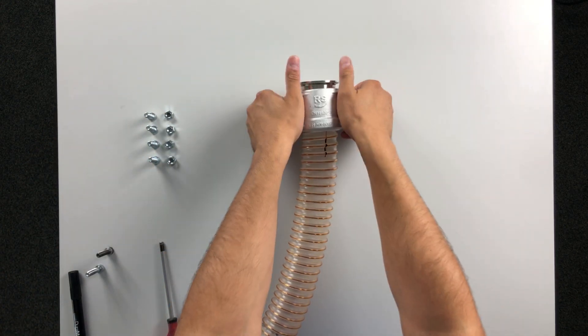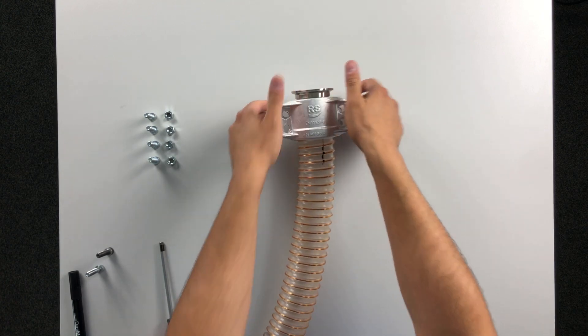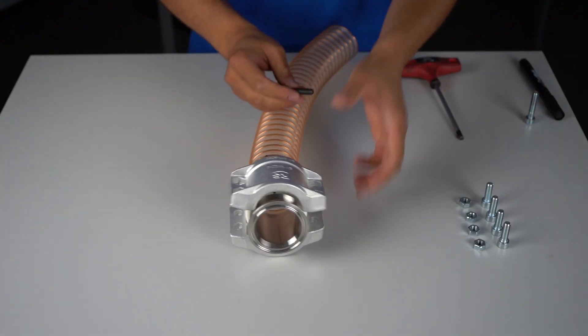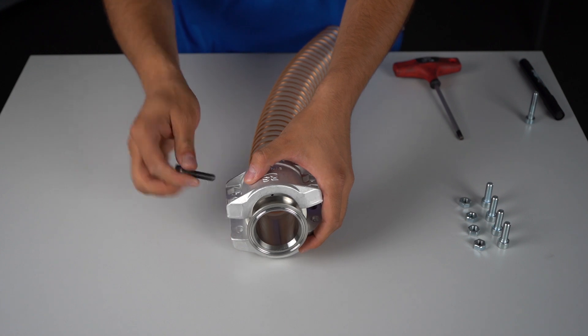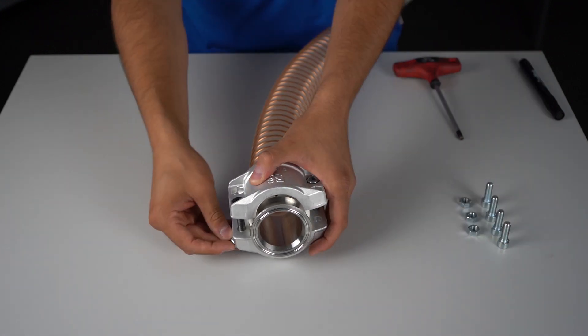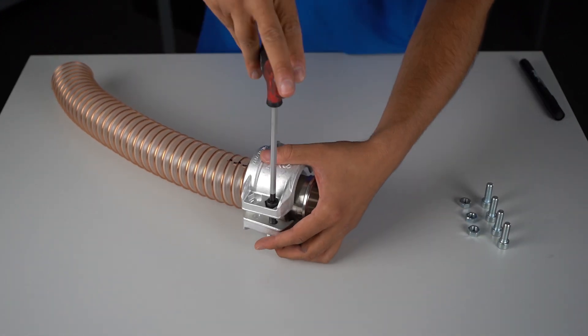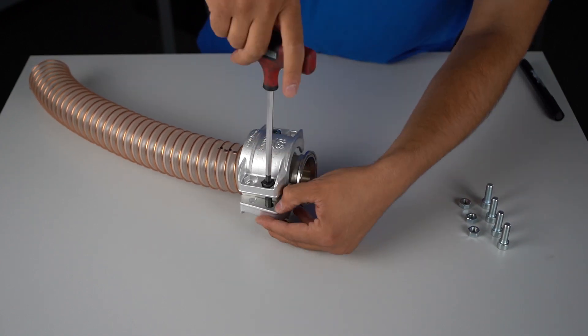The clamping shells must be positioned so that the stripped wire is centrally covered by the clamping shells. That is why we made the marking. Finally, the screws and nuts can be tightened crosswise.